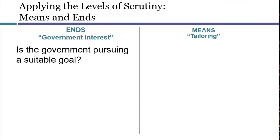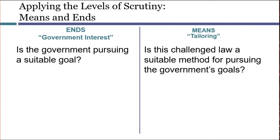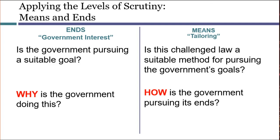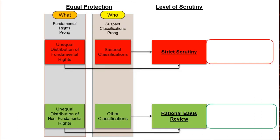Courts then proceed to evaluate the means that are used to pursue these governmental interests. This is often known as tailoring — asking how good a fit exists between the law and the government interest. I sometimes find it useful to think of ends and means questions as involving why and how. At each level of scrutiny, we can ask whether the ends and the means are good enough to justify reliance on the classification that is being challenged.